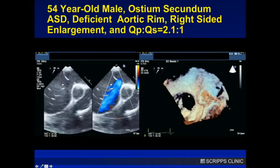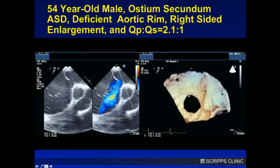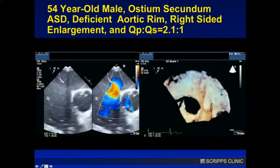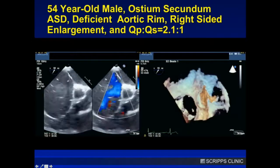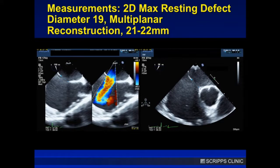Here's the case: a 54-year-old male with an ASD, deficient aortic rim, right-sided enlargement with a significant shunt. You can see the 2D and 3D views — pretty floppy septum, the septum primum is floppy, there is a deficient aortic rim, fairly circular on 3D Echo. The largest resting defect diameter on 2D Echo was about 19 millimeters; multi-planar reconstruction showed about 21 to 22 millimeters. I don't balloon-size my ASDs, especially with this kind of floppy septum. My plan was to upsize and use a 26-millimeter device.